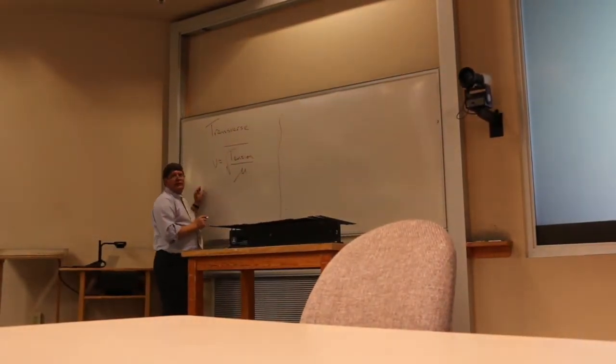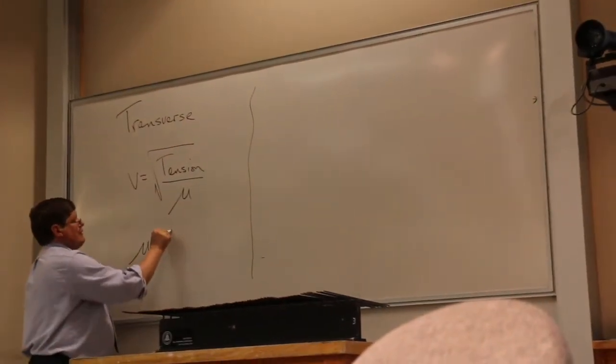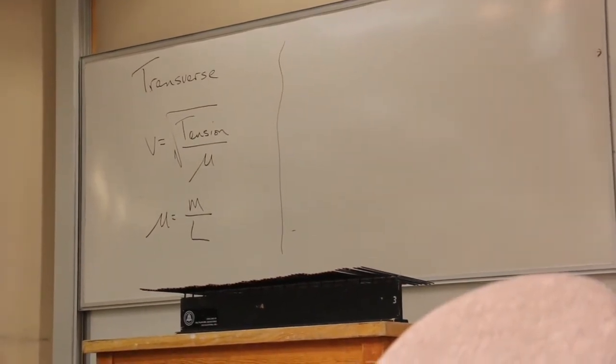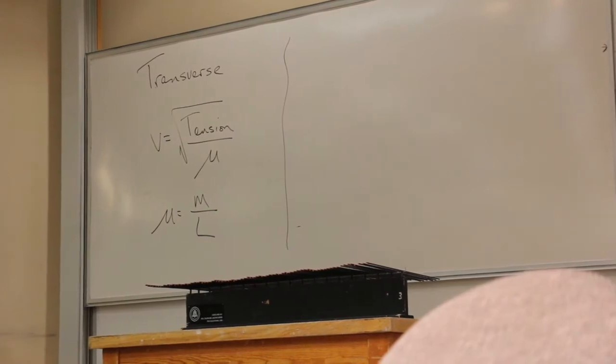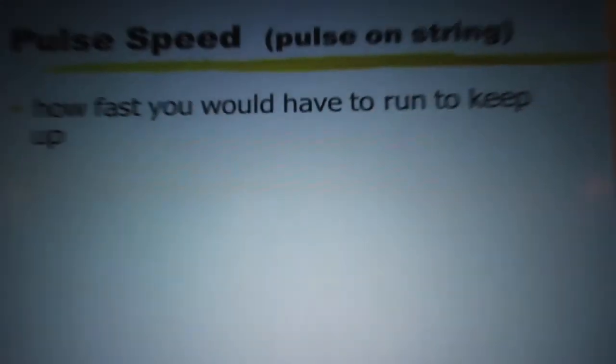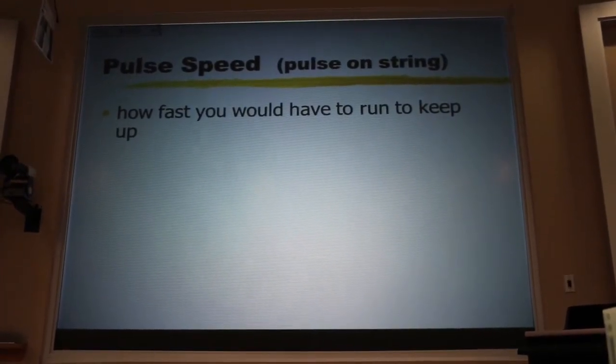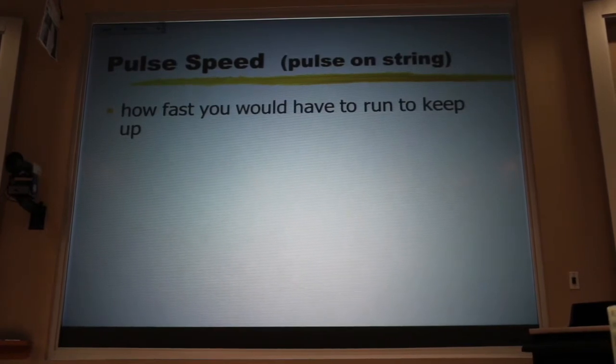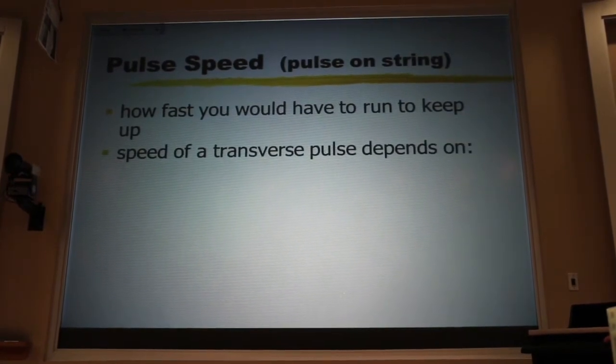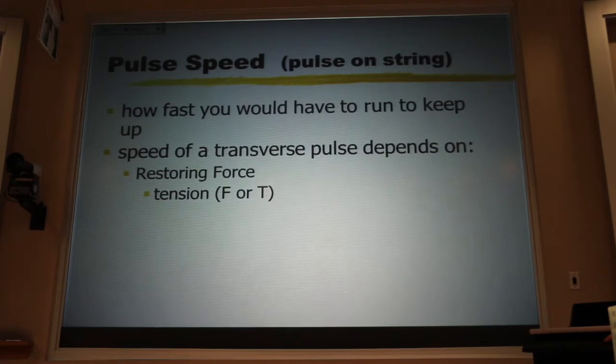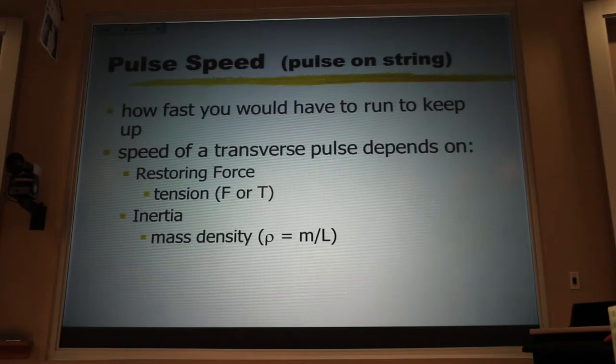In the book, we use this mu symbol, where mu is the mass over the length. This is what we saw when we had simple harmonic motion. The timing was dependent upon how hard it was to move something, how much inertia there was, and how much restoring force there was. In this case, the restoring force is that tension force, and that measure of how hard it is to speed it up or slow it down, that's the mass density, how much mass there is in a unit of length. Now, you notice that here,